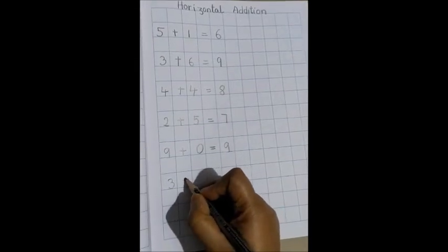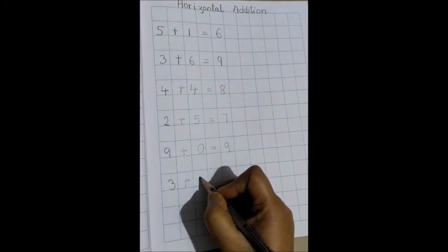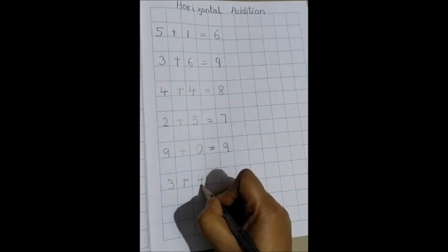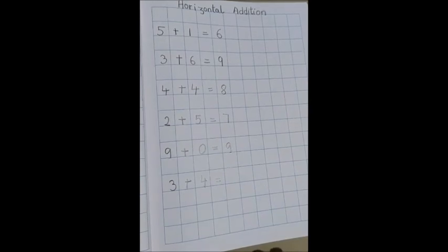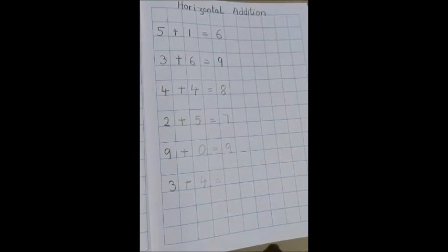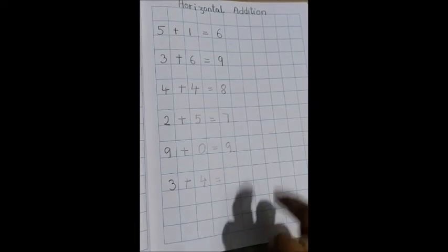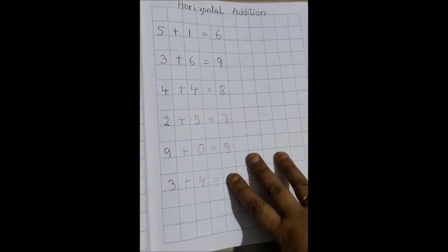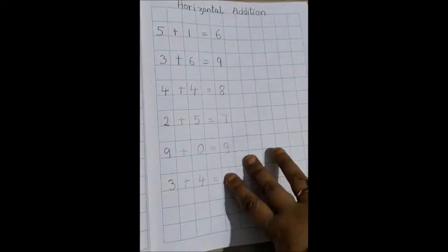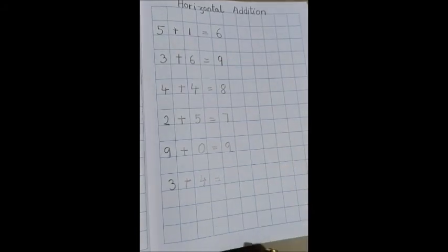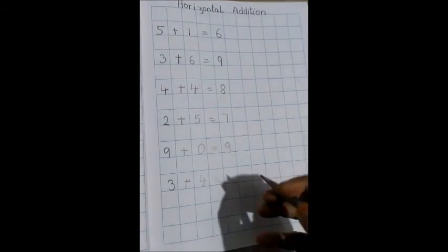Let's do one more sum. 3 plus 4 equals to. So which is the bigger number, 3 or 4? Think and tell me. 4 is the bigger number and how many fingers should be out? 3 fingers should be out. So after 4 what will be? 5, 6 and 7. So what will be our answer? 7.